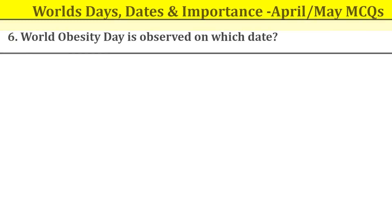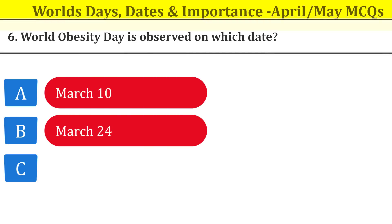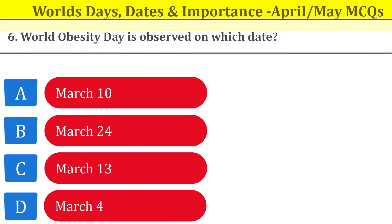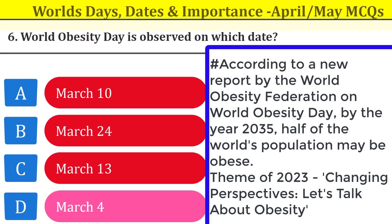Question number six: World Obesity Day is observed on which date? World Obesity Day is observed on 4th March. According to a new report by the World Obesity Federation, on World Obesity Day, by the year 2035, half of the world population may be obese. The theme of 2023 is 'Changing Perspectives: Let's Talk About Obesity.'